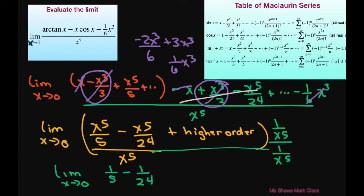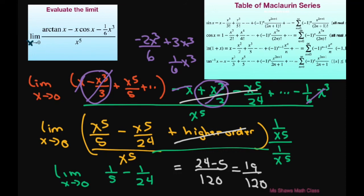Alright, they're just going to disappear, and that's what you're going to get. So the common denominator is 120, so this is 24 minus 5 which equals 19 divided by 120. And that is your limit.